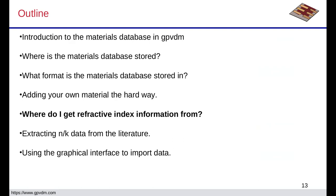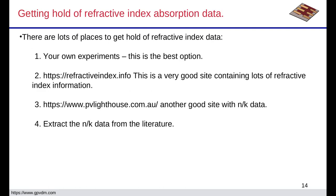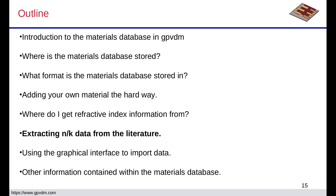Where do you get N and K data from? Your own experiments — this is the best option. If you're measuring N and K data for a particular film, use that. Otherwise, you can use refractiveindex.info, which is a very good site containing lots of refractive index data. PV Lighthouse also has some N and K data, or you can extract N and K data from papers and literature.